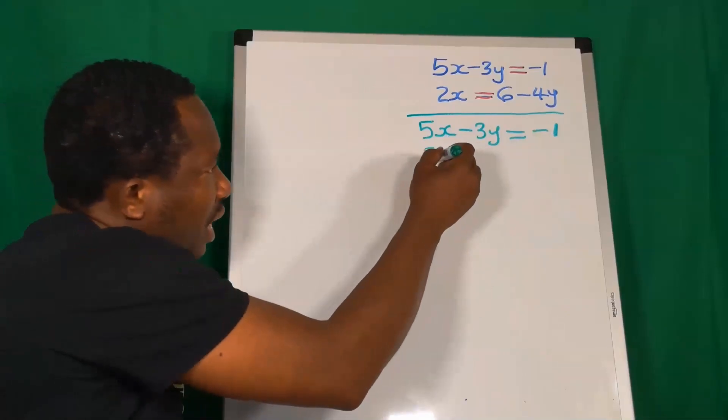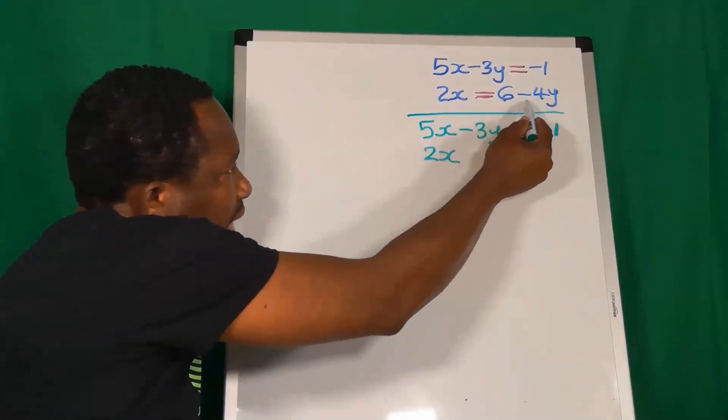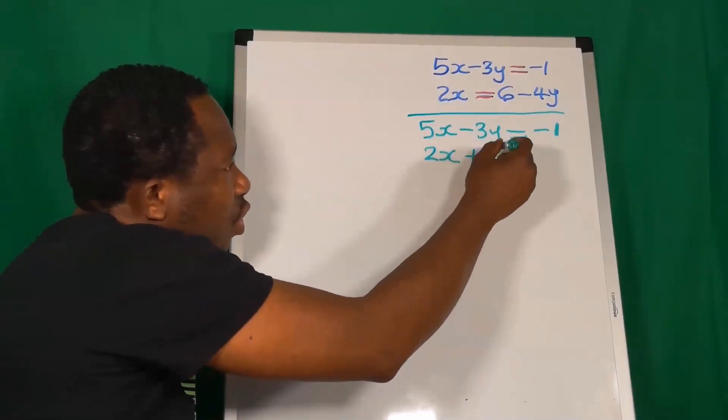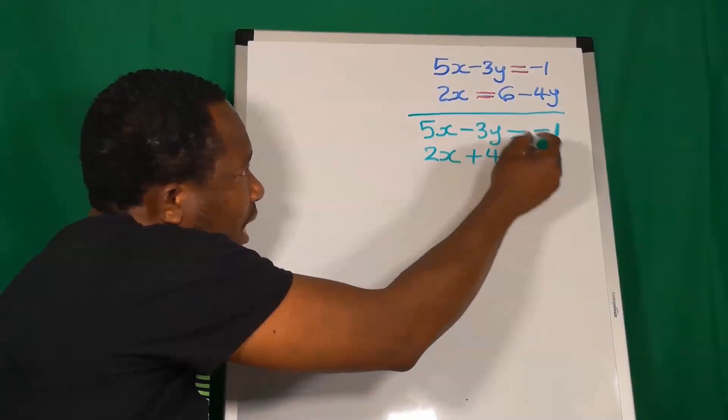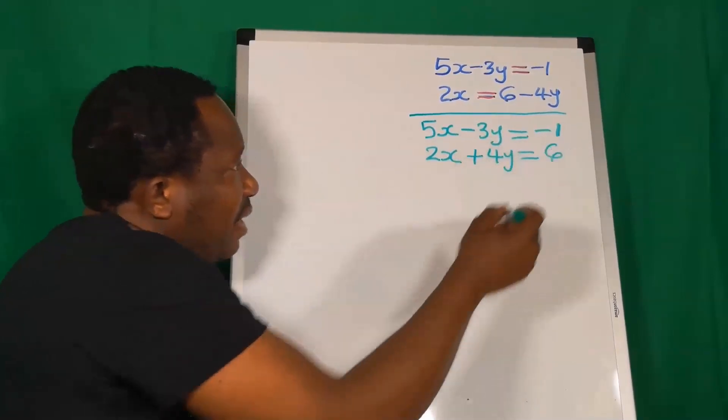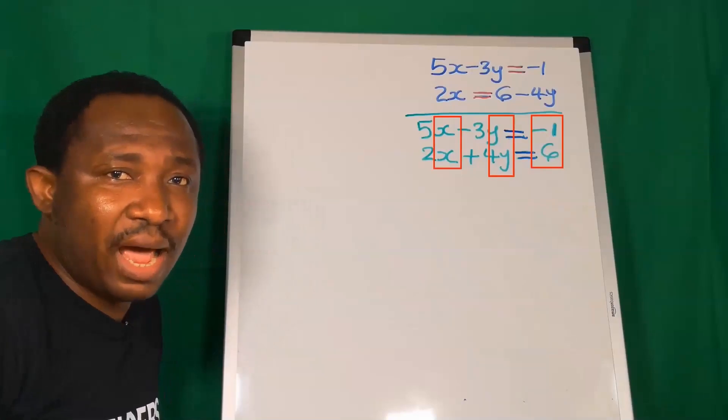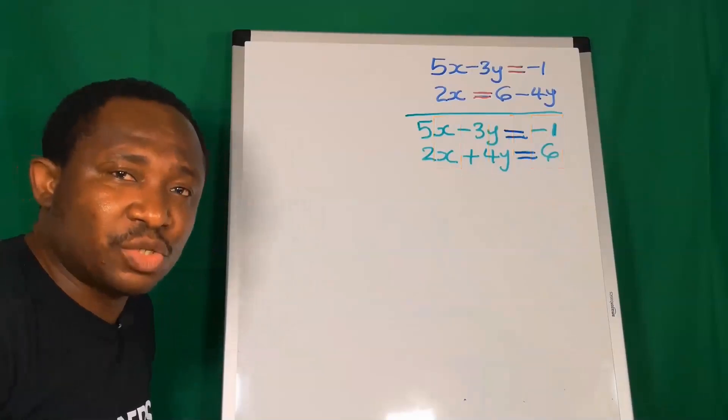For us to have 2x, this minus 4y will need to move. On the other side, we become plus 4y. And on this side, I'm left with 6. Now that the equations are rearranged, let's start solving.